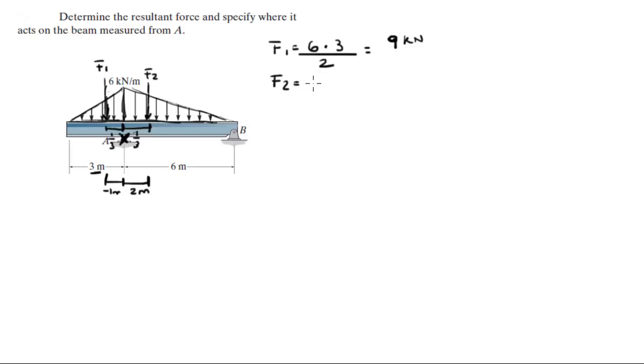F2 is given by six kilonewtons per meter - this is six right here - times the length which is six, and it's a triangle so it's divided by two to find the area. Six times six is 36 divided by two is 18 kilonewtons.